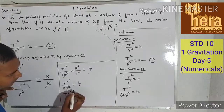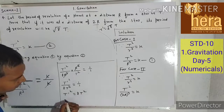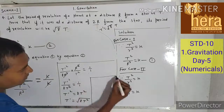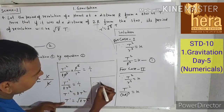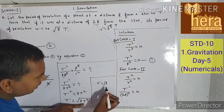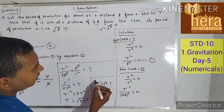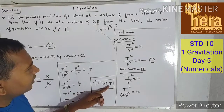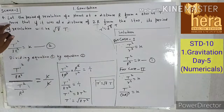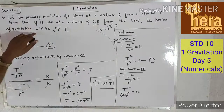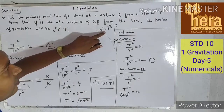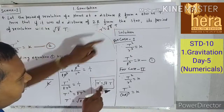Therefore T' = √(8T²) = √8 · T. So T' = √(8)T. This is what we had to prove: when the distance between planet and star is 2R, the period of revolution T' = √(8)·T.